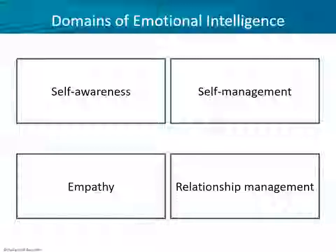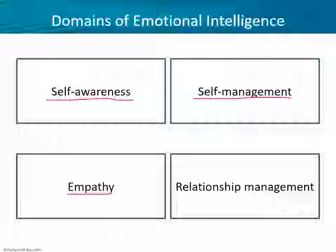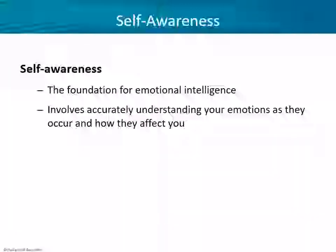Professional communicators have divided emotional intelligence into four different domains, each interesting in its own right. We'll talk about self-awareness and self-management, empathy, and relationship management. First up is self-awareness — what they call the foundation for emotional intelligence. In other words, the most important one: if you don't have self-awareness, all the rest is a moot point. It involves accurately understanding your emotions as they occur and how they affect you.